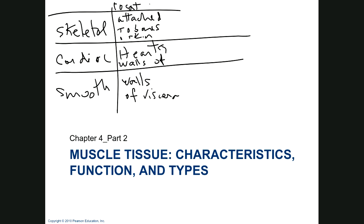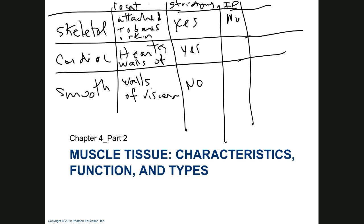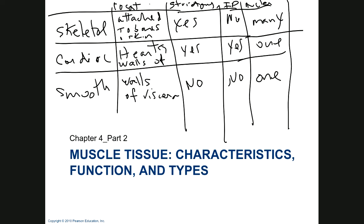Continuing the chart: for striations — skeletal yes, cardiac yes, smooth no. For intercalated discs — skeletal no, cardiac yes, smooth no. For nuclei — skeletal has many (multinucleated), cardiac has one, smooth has one.